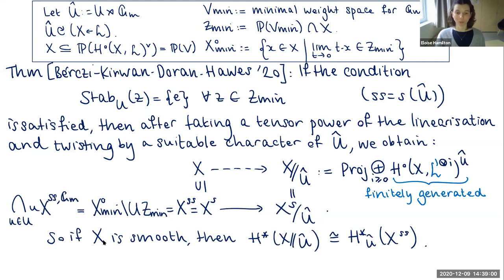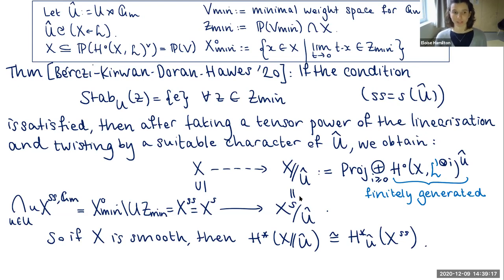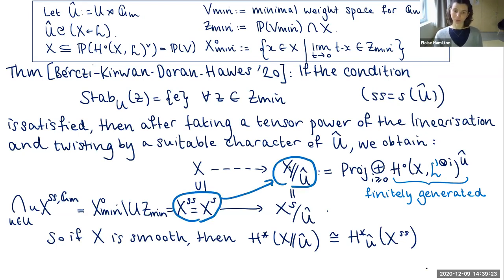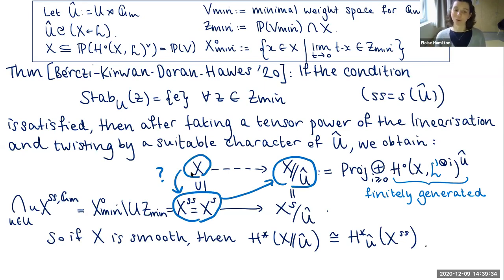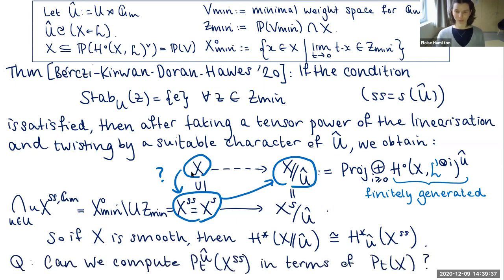In the case where X is smooth, the cohomology of the quotient will be isomorphic to the Û-equivariant cohomology of the semi-stable locus, because we know it's an orbit space and at worst can have only finite quotient singularities. So if we want to work out the cohomology of the quotient, it's enough to work out the Û-equivariant cohomology of the semi-stable locus. The question then becomes: how can we work that out knowing only the cohomology of X itself?